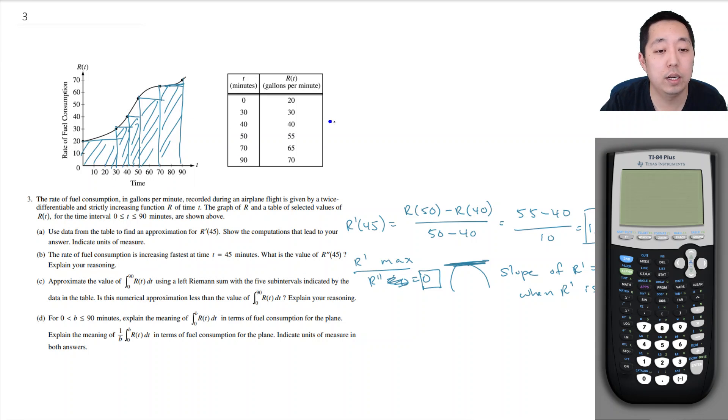So the width of the first interval is 30. So you do 30 times the height, we're going to use the left point, that's 20. 30 times 20, plus this interval is 10, and this height, I use the left point, is 30. This interval here is also 10, and its height is 40. This interval here is 20, and the height is the left point, which is 55. And this interval is also 20, and its height is 65.